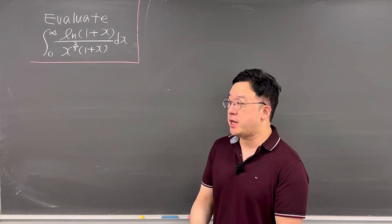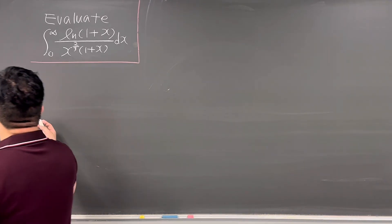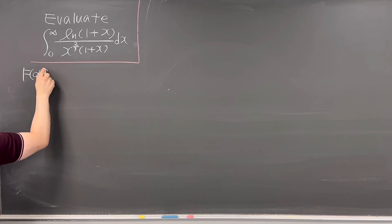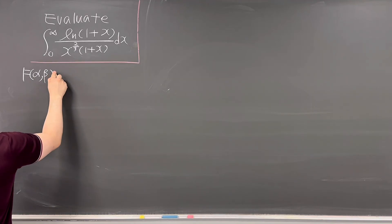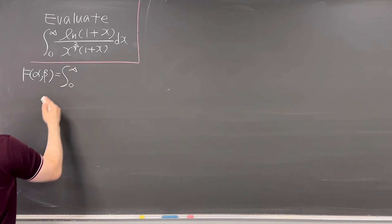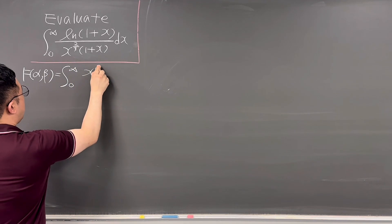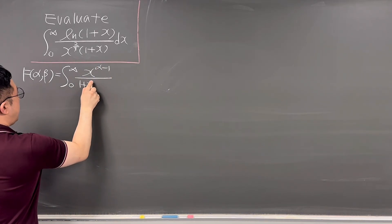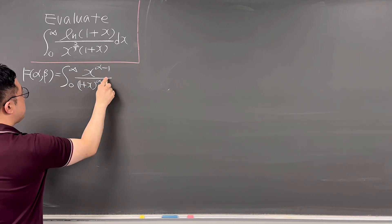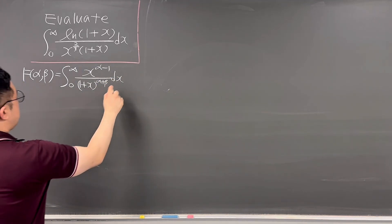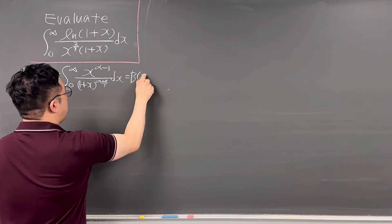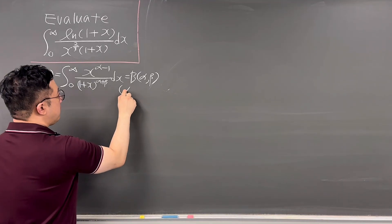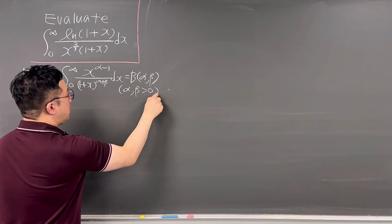A viewer requested using beta functions, so we'll use the beta integral. The beta function B(α, β) is defined as the integral from 0 to infinity of x to the power of α minus 1, over (1 + x) to the power of α plus β, dx — valid when both α and β are greater than 0.